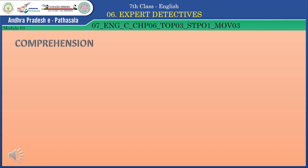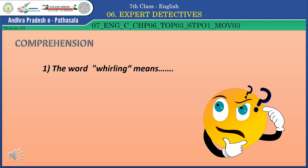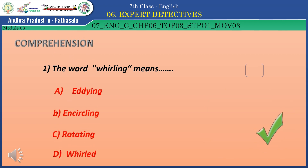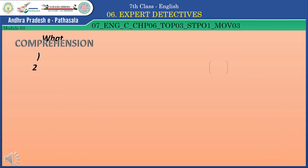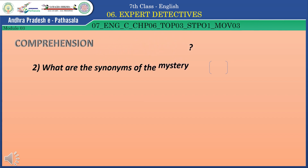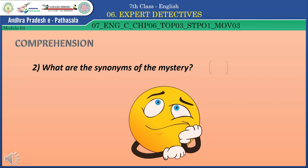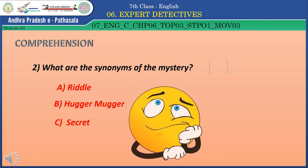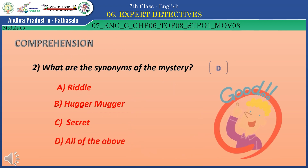Children, let's move on to the vocabulary comprehension. Question 1: The word 'whirling' means — Option A: Edging. Option B: Encircling. Option C: Rotating. Option D: Whirled. The correct answer is Option C — Rotating. The correct answer for the next question is Option D — All of the above.